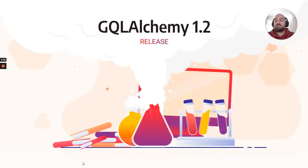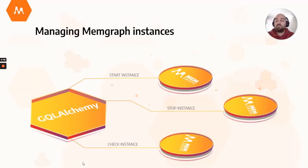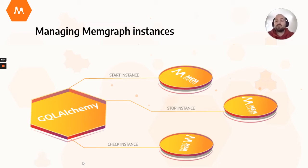Now, let's cover some of the features that made it into the new release. We added a new module called Instance Runner and it allows you to start, stop and check Memgraph instances from your Python code with GQLAlchemy. Instead of opening a new terminal to start Memgraph or writing Python or Bash scripts that will do that for you, you can just use the Instance Runner module.